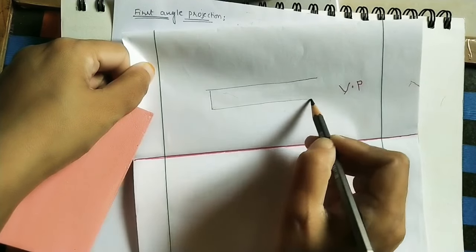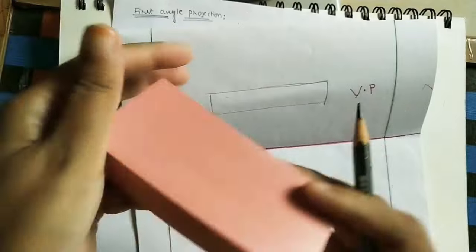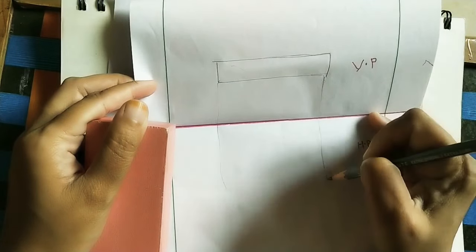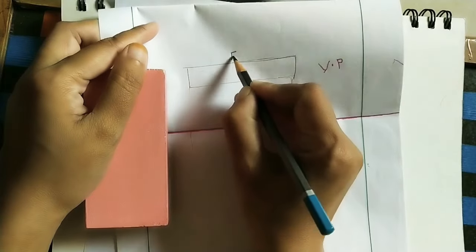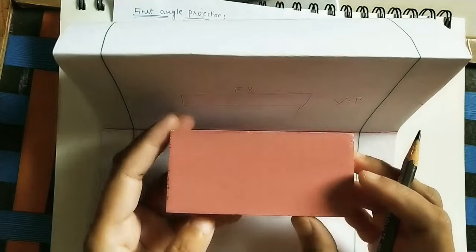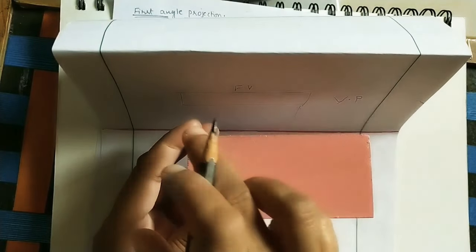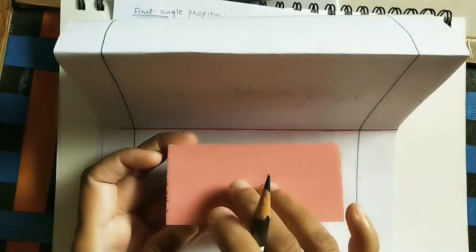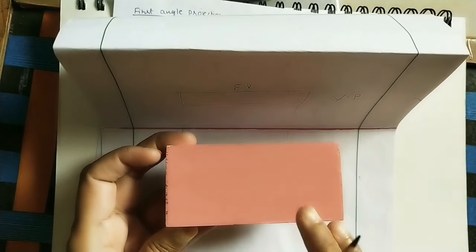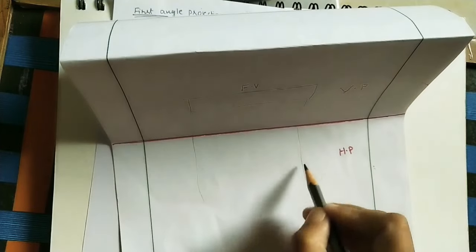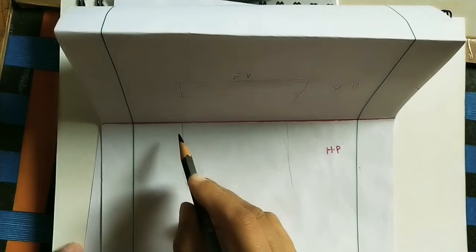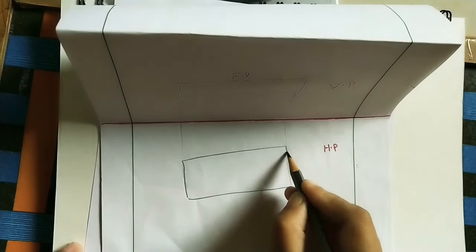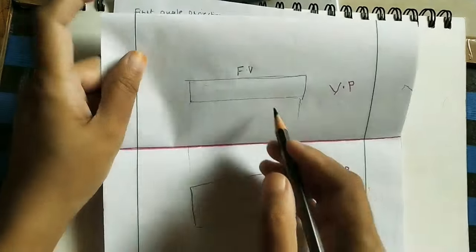So roughly, this diagram is the front view. I draw projector lines — light-colored lines. This is the front view on the vertical plane. For the top view, we look from above — we can see the bigger rectangle. At whatever distance the object is from the VP, after that distance we can see the rectangular surface in the horizontal plane. So the top view is seen in the horizontal plane. Front view comes on the vertical plane, top view comes on the horizontal plane.